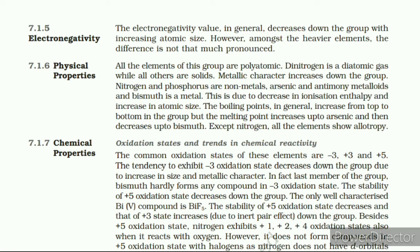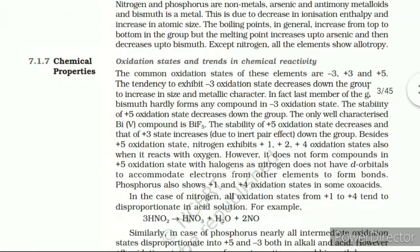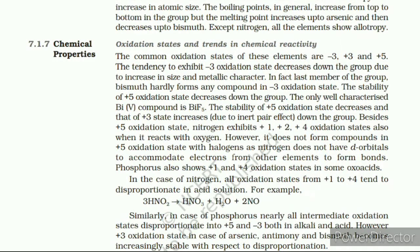7.1.7 Chemical Properties: Oxidation States and Trends in Chemical Reactivity. The common oxidation states of these elements are −3, +3, and +5. The tendency to exhibit −3 oxidation state decreases down the group due to increase in size and metallic character. In fact, the last member bismuth hardly forms any compound in −3 oxidation state. The stability of +5 oxidation state decreases down the group; the only well-characterized bismuth(V) compound is BiF₅. The stability of +5 oxidation state decreases and that of +3 state increases due to the inert pair effect down the group.